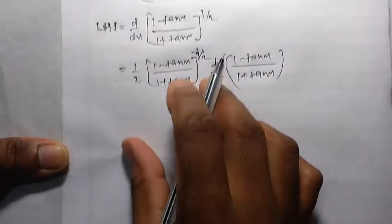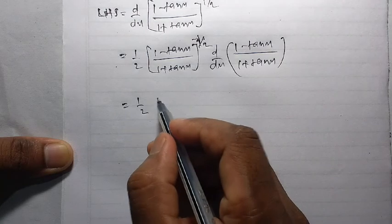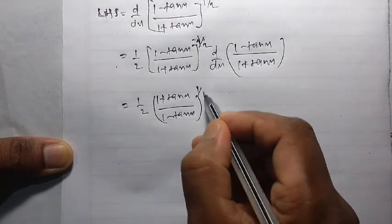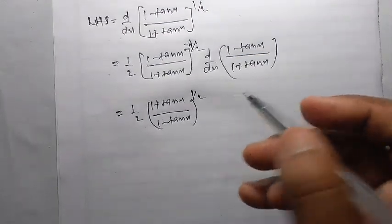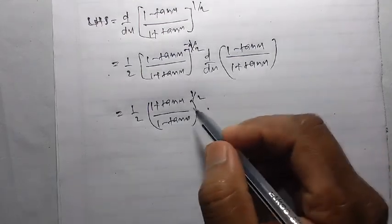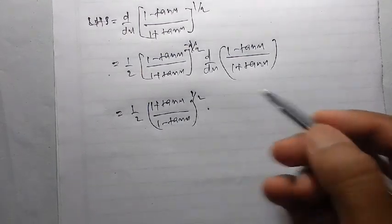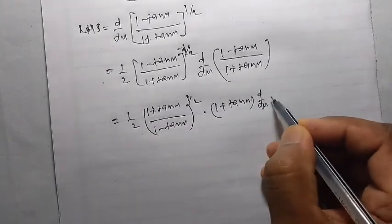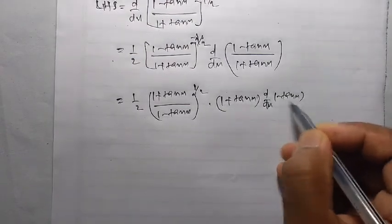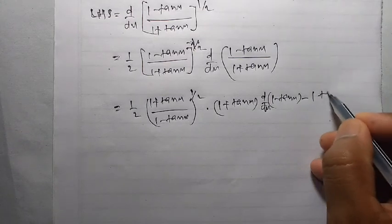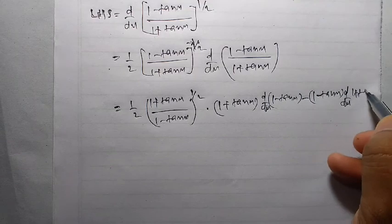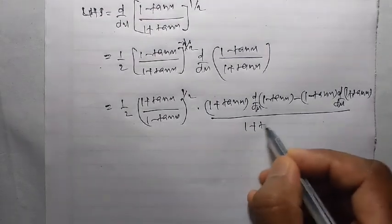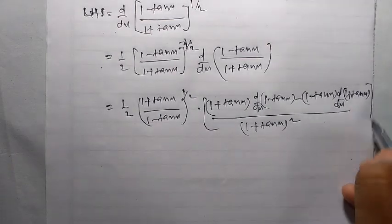This equals half into (1 plus tan x) by (1 minus tan x) to the power half — the numerator has been taken to the denominator and the denominator to the numerator. Now applying the quotient rule U by V: (1 plus tan x) times derivative of (1 minus tan x), minus (1 minus tan x) times derivative of (1 plus tan x), whole divided by (1 plus tan x) whole square.